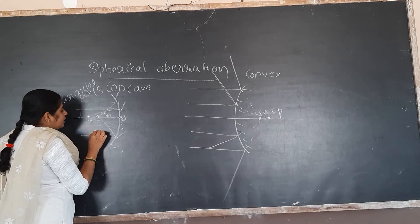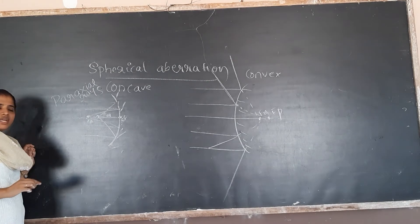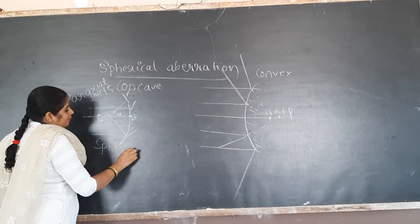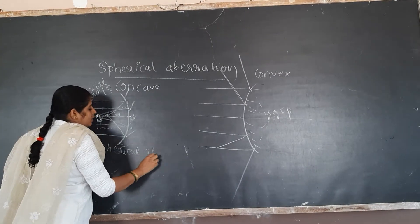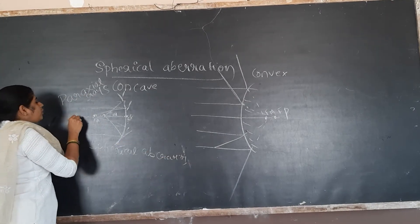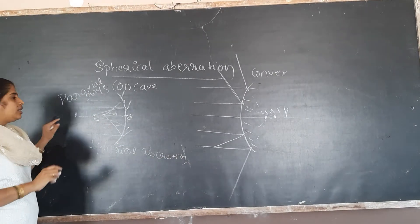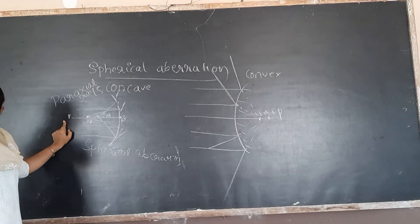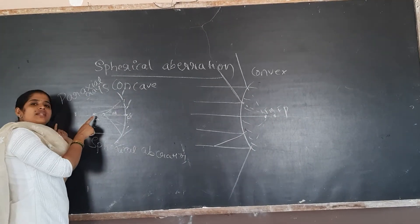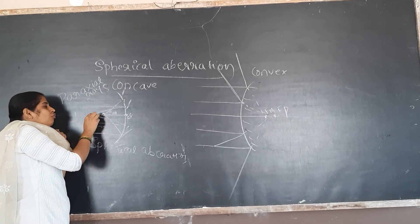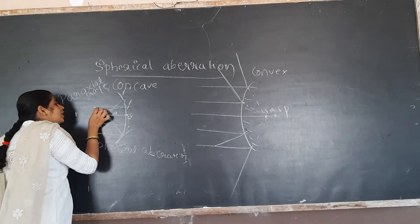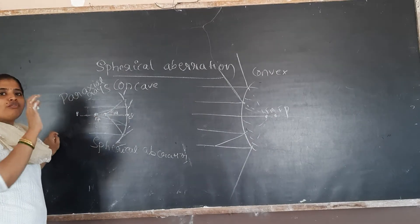So the distance between these two focus points gives the spherical aberration. Means: if there is a point object, you should ideally get only one focus — one image. But here you are not getting one image. Here you get one focus, and there another focus. So you are getting a circular shape of image.